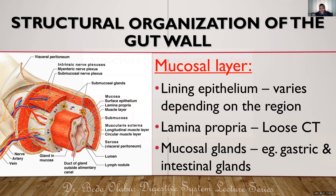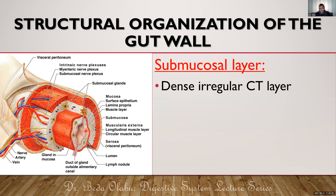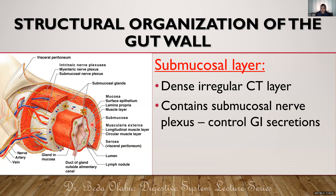Beyond the mucosa we talk of the submucosal layer, which is a zone of dense irregular connective tissue. This layer contains a number of nerve plexuses within it. The nerve plexus found within the submucosa of the GIT is known as the submucosal nerve plexus, or the Meissner's plexus. This submucosal nerve plexus is part of the enteric nervous system and primarily controls the secretions of the GIT.